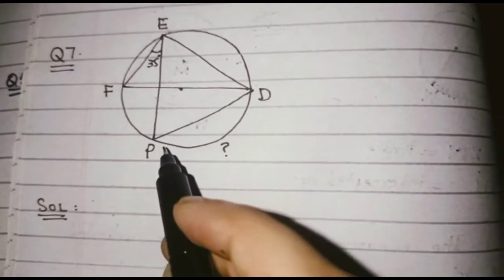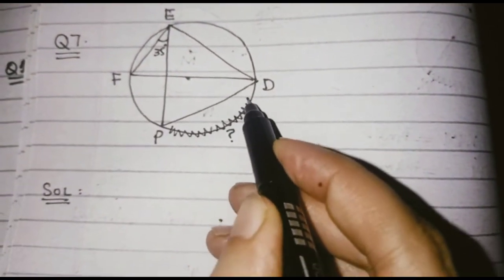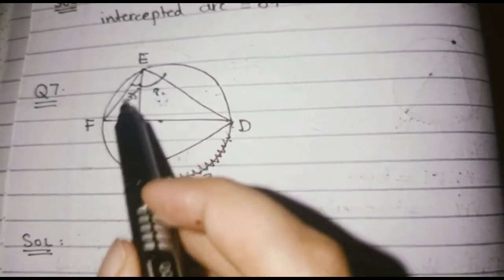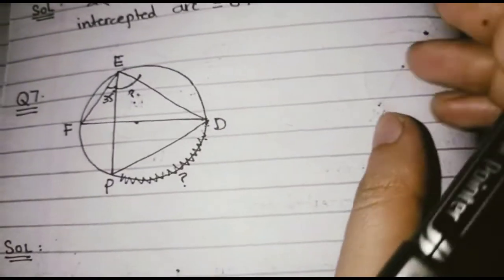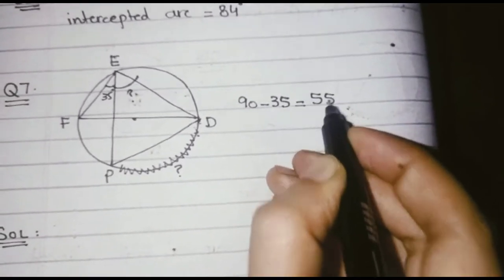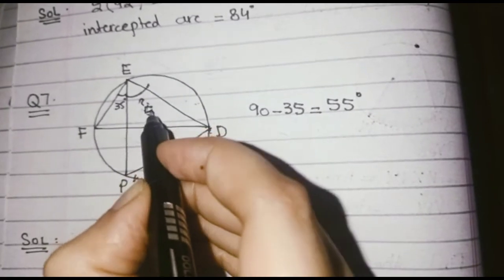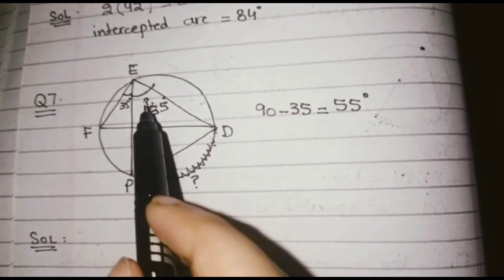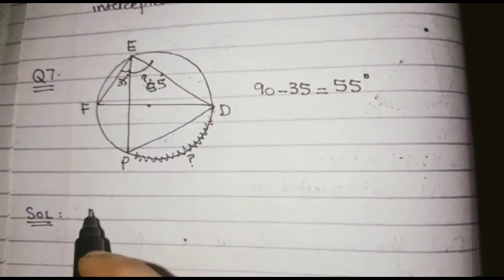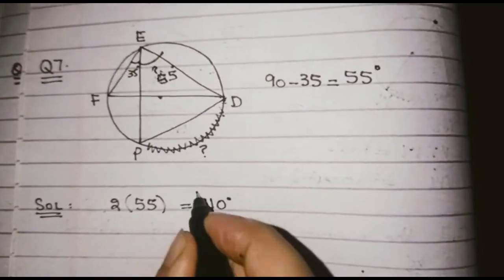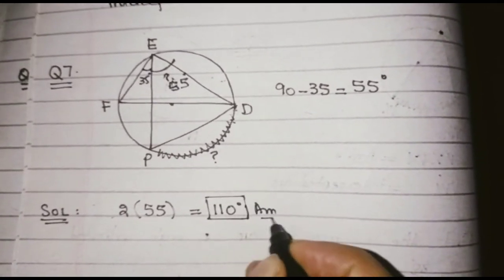In this question, we have to find the intercepted arc where there is a question mark. To find it, we first need the inscribed angle. We know that these are two perpendicular lines making an angle of 90 degrees, so we subtract 35° from 90° to get the other angle: 55 degrees. This angle equals 55°, and the intercepted arc is two times 55°, which equals 110 degrees. So the intercepted arc is 110 degrees.